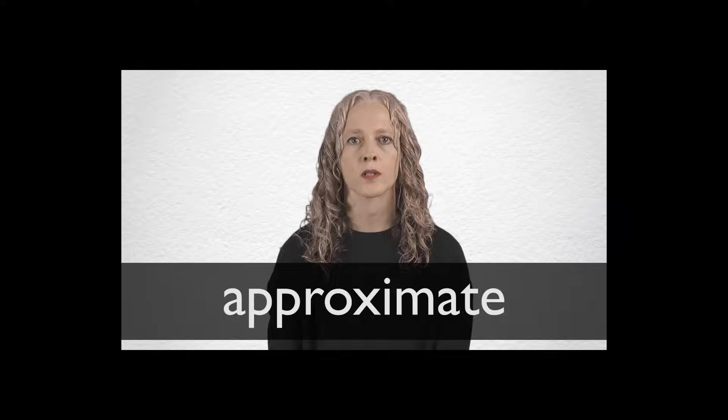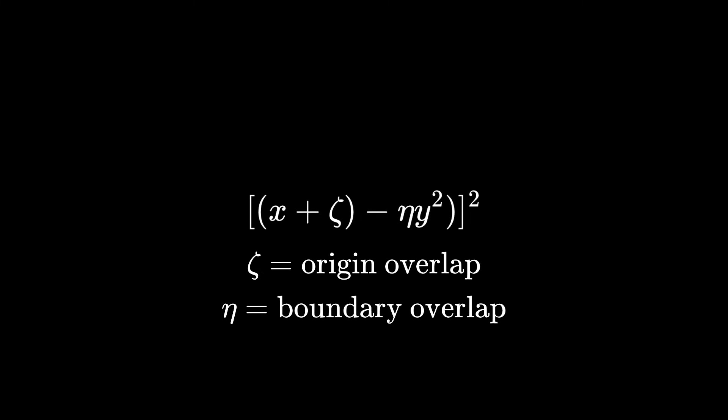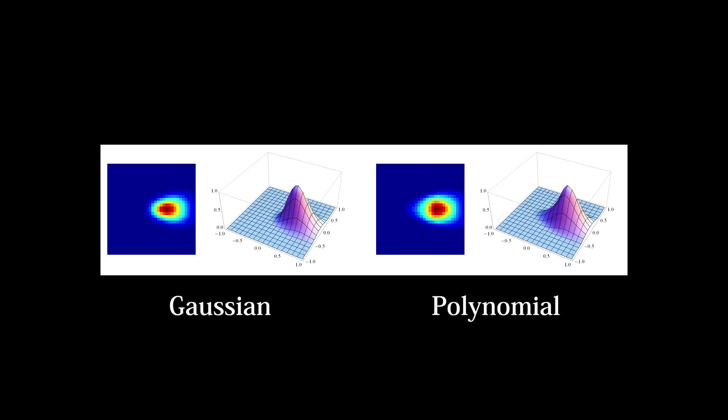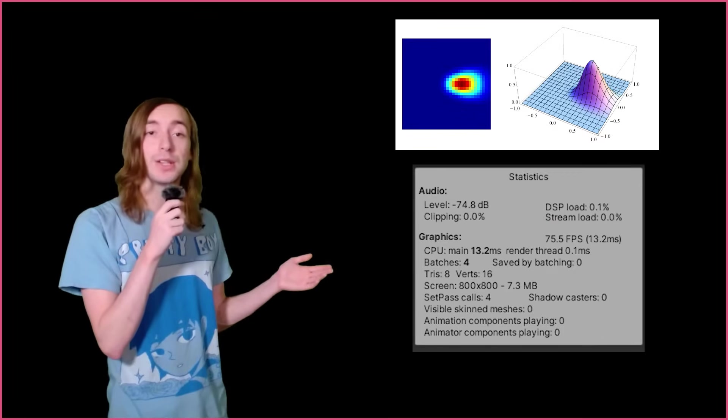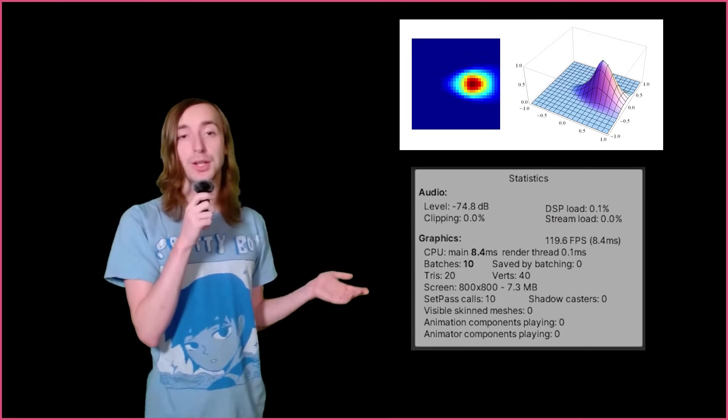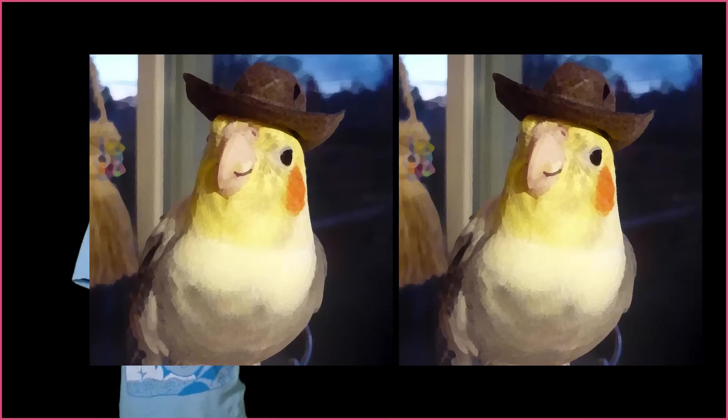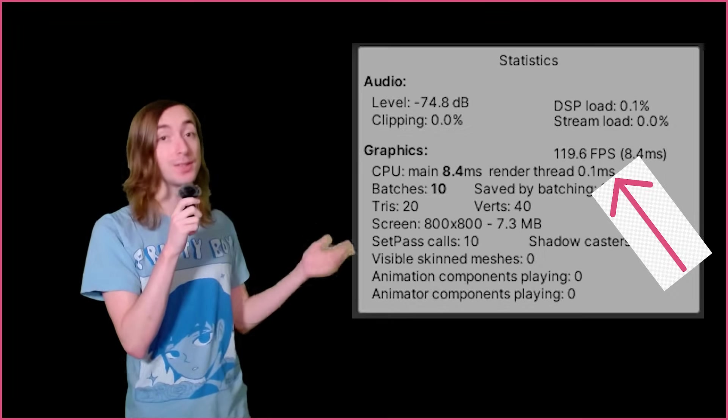Thankfully, we can just ditch the Gaussian function entirely, and instead approximate the weight with polynomials. Our polynomial function looks like so, where zeta controls how much the sectors overlap at the filter origin, and eta controls how much the sectors overlap at their boundaries. With the proper parameters, the result is a weighting function similar to the Gaussian function. If you're interested in the formulation of this function, the paper in the description goes quite in-depth. Substituting the Gaussian weights with our new polynomial weights, the image looks pretty much exactly the same, except our performance has improved considerably.